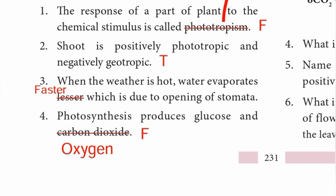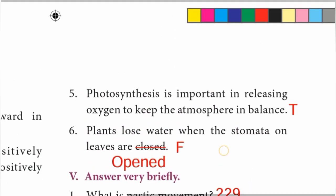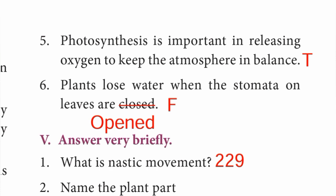Number four: photosynthesis produces glucose and carbon dioxide. The statement is false. The correct statement is photosynthesis produces glucose and oxygen. Number five: photosynthesis is important in releasing oxygen to keep the atmosphere in balance. The statement is true. Number six: plants lose water when the stomata on leaves are closed. The statement is false. The correct statement is plants lose water when the stomata on leaves are opened.